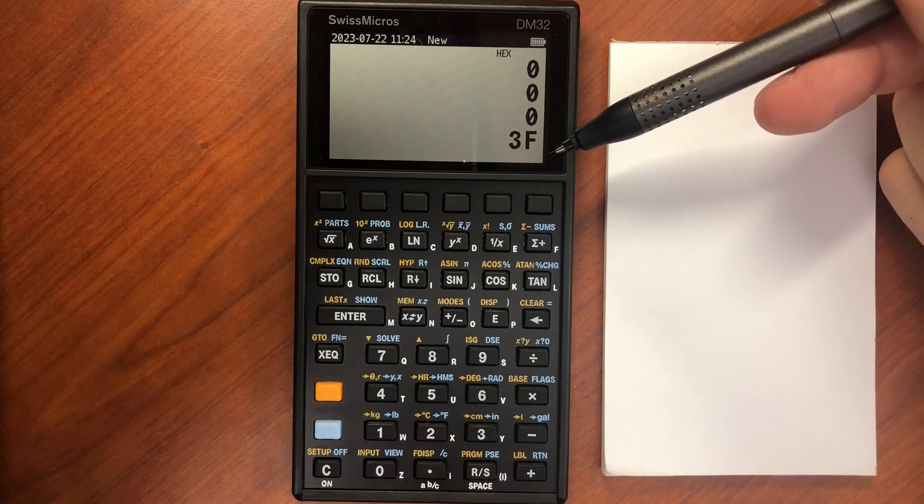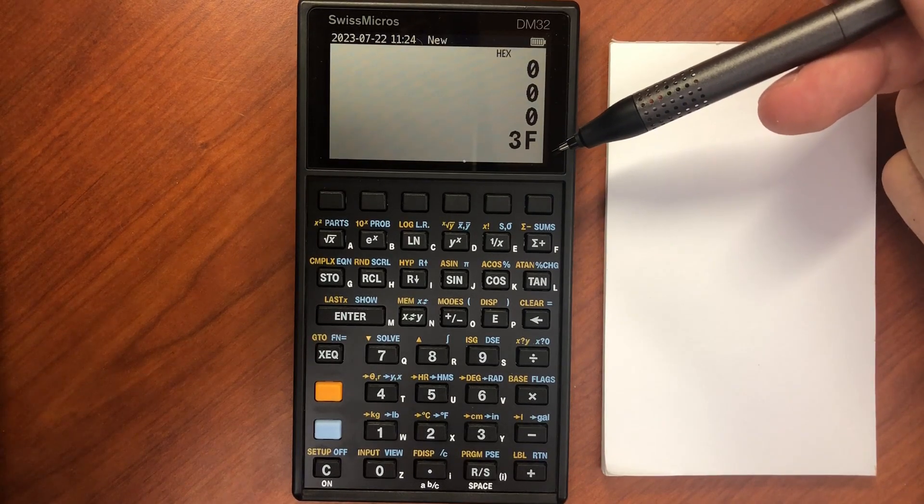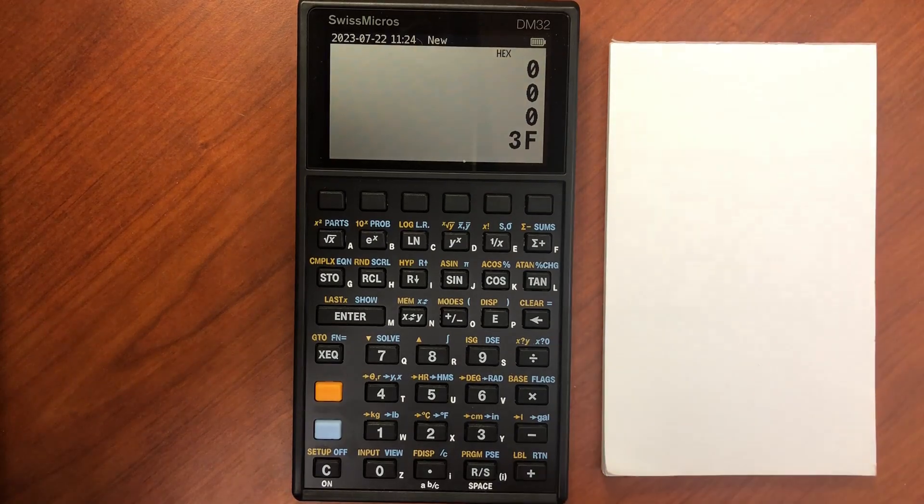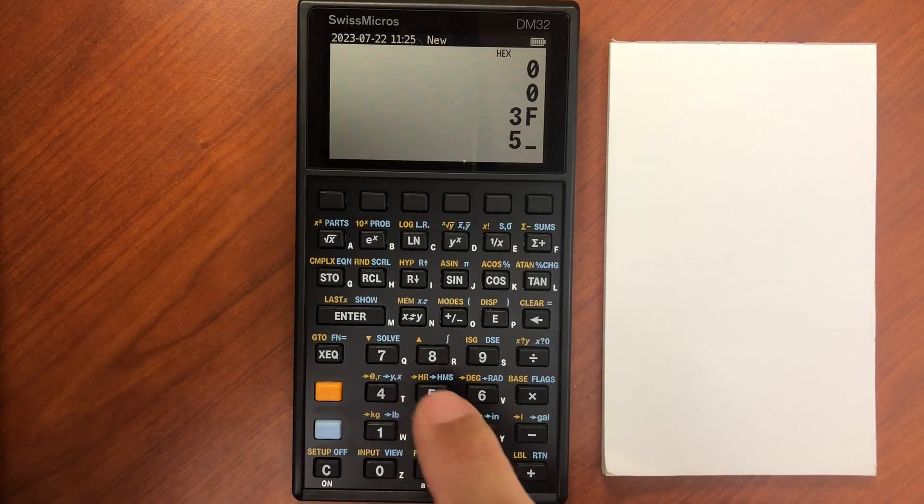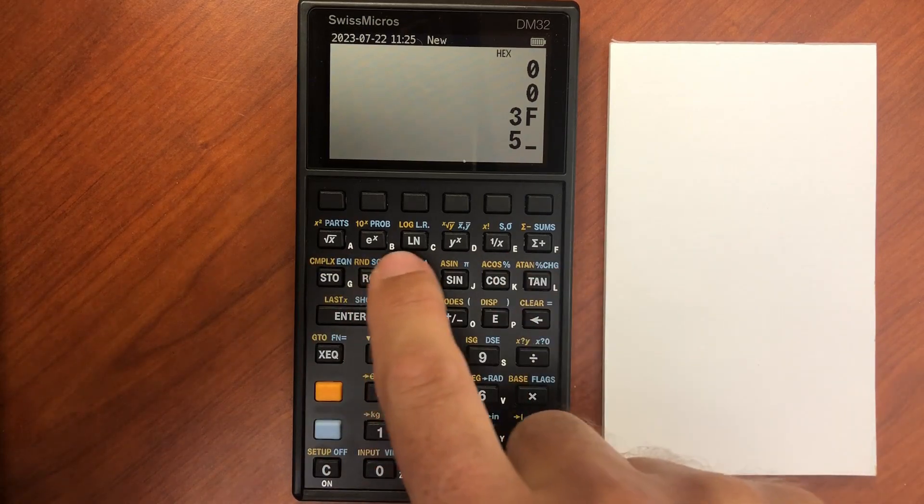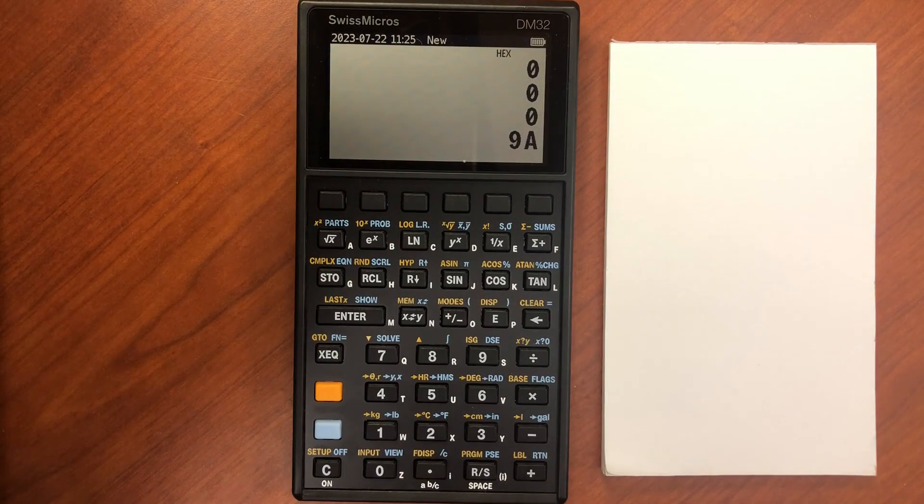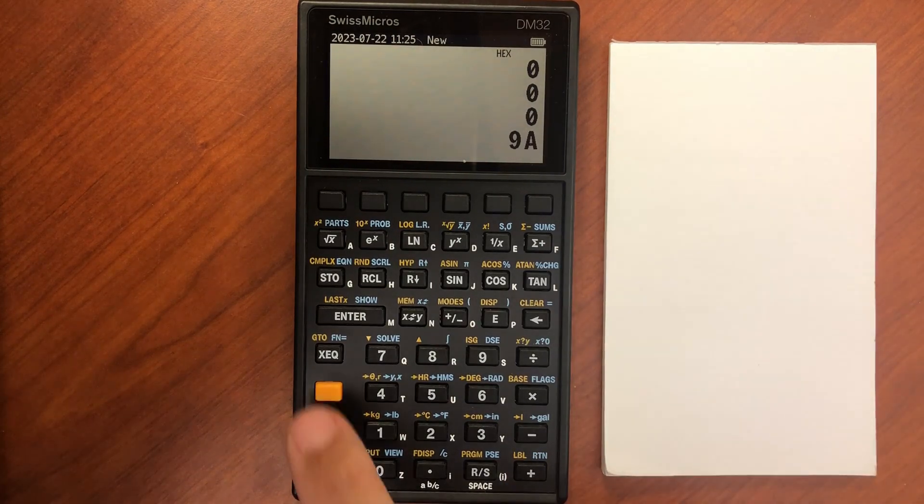If I want to add in a hexadecimal value with letters in addition to numbers, like 5b, I can use any of these keys on the top, a through f, to add in the letter that I want. So 5b, and let's add that together, and my result is 9a.